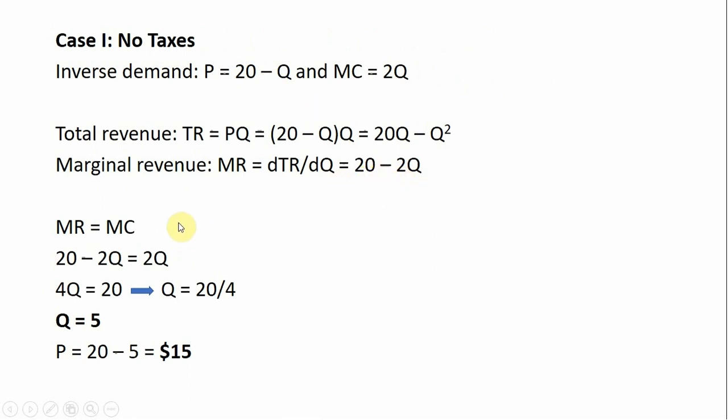We set marginal revenue equal to marginal cost: 20 minus 2Q equals 2Q. Collecting the Q terms, 4Q equals 20, and dividing through by 4, Q equals 5. So the profit maximizing output for this monopolist is 5 units. Plugging 5 into the inverse demand function — 20 minus Q where Q is 5 — we get a price of $15. The profit maximizing price is $15.